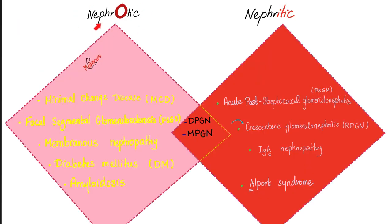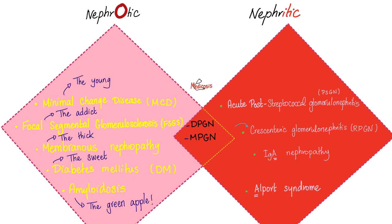When it comes to histopathology, nephrotic syndrome could be many diseases, including minimal change disease, focal segmental glomerulosclerosis, membranous nephropathy, diabetic nephropathy, and amyloidosis. Nephritic includes other diseases, and there are two overlap diseases in between. Let's talk about nephrotic syndrome: the young, the addict, the thick, the sweet, the green apple.